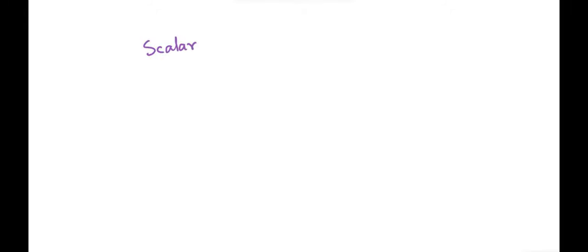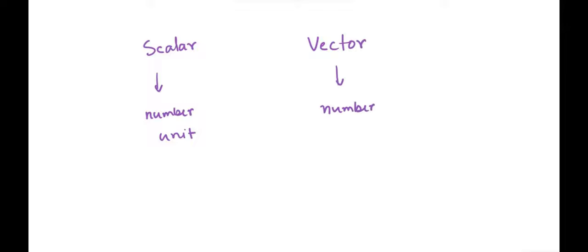Then we go to the types of quantities we'll be dealing with. One type is scalar — quantities that are sufficiently described by a number along with a unit. But there are quantities which have geometric properties, and they are called vectors. Numbers and units are not enough for vectors; they also need direction: number, unit, and direction.